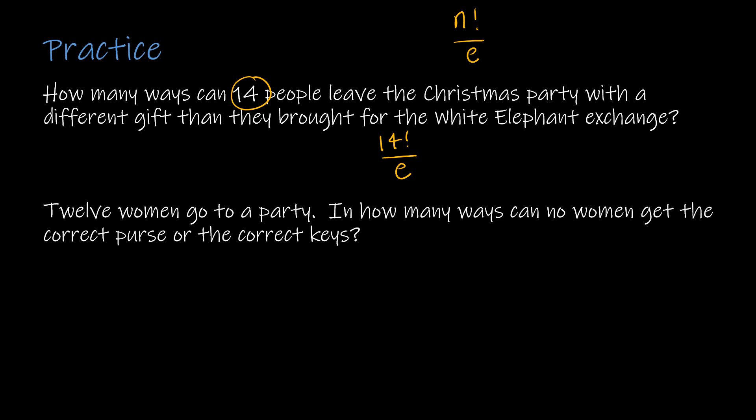The second one's a little bit more complicated. We have 12 women going to a party. It says, how many ways can no woman get the correct purse or keys? So essentially what we're saying is the person doesn't get the correct coat, so that's 12 factorial divided by e, and the person doesn't get the correct keys, so times 12 factorial over e. So that's going to be my solution.